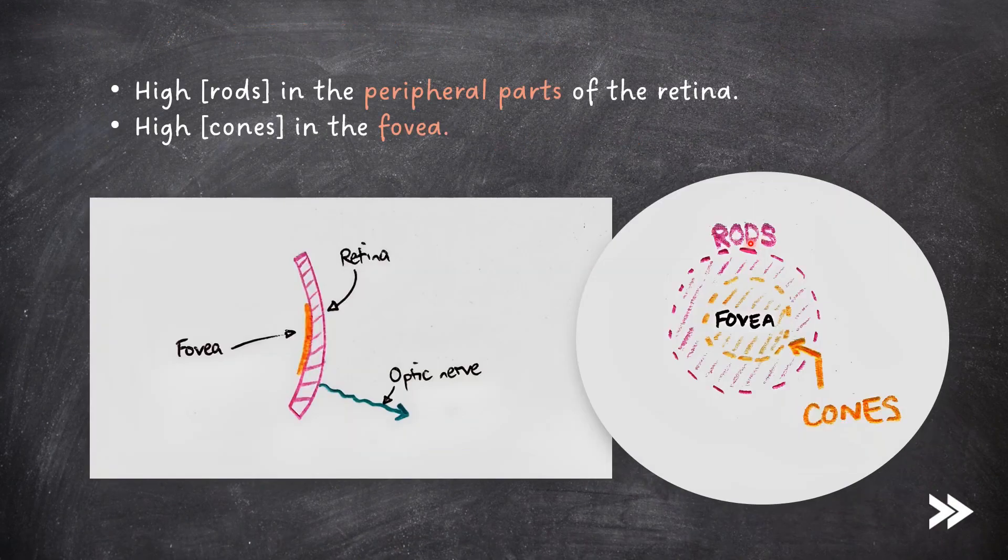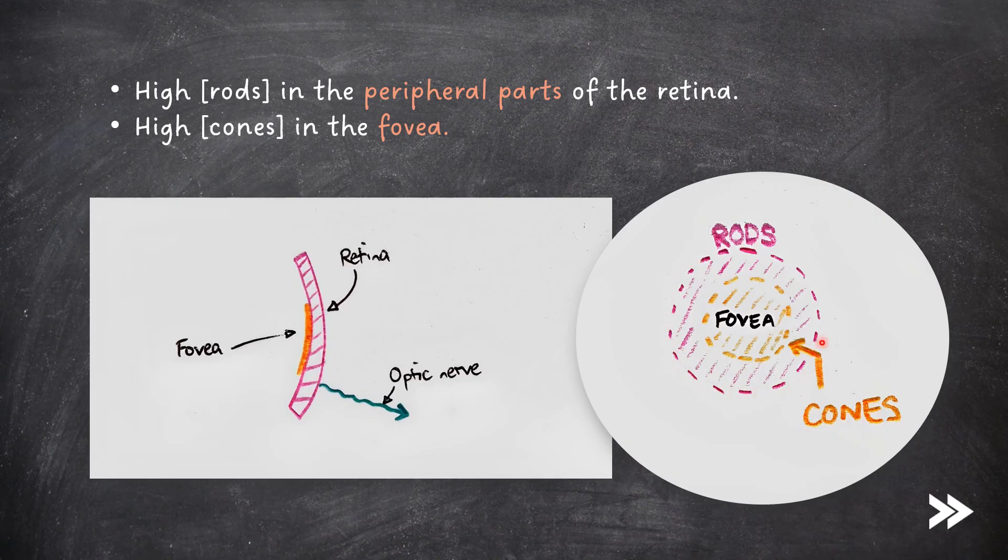Note that there is a high concentration of rods in the peripheral parts of the retina. There is a high concentration of cones in the fovea.